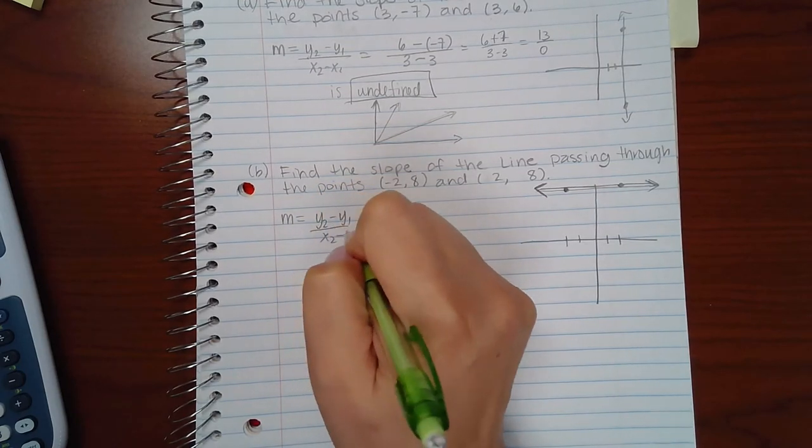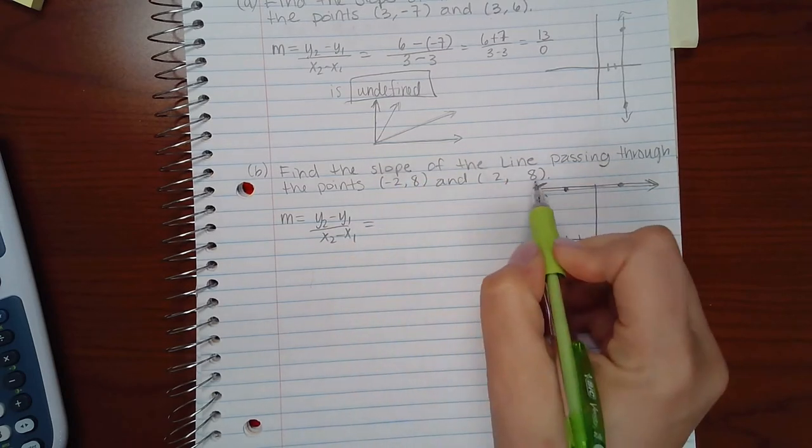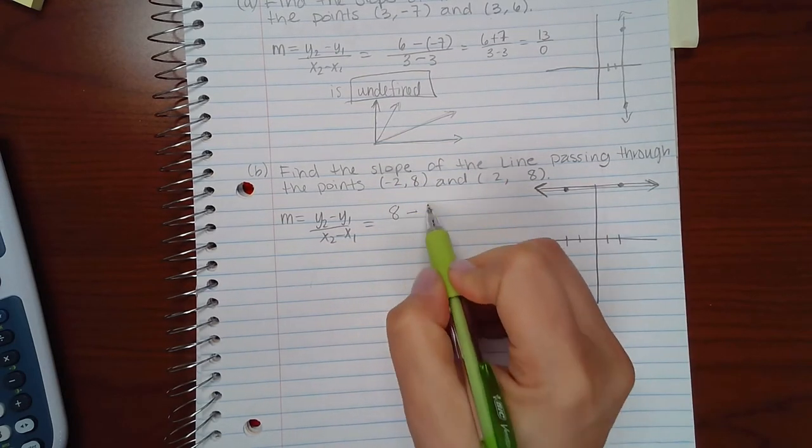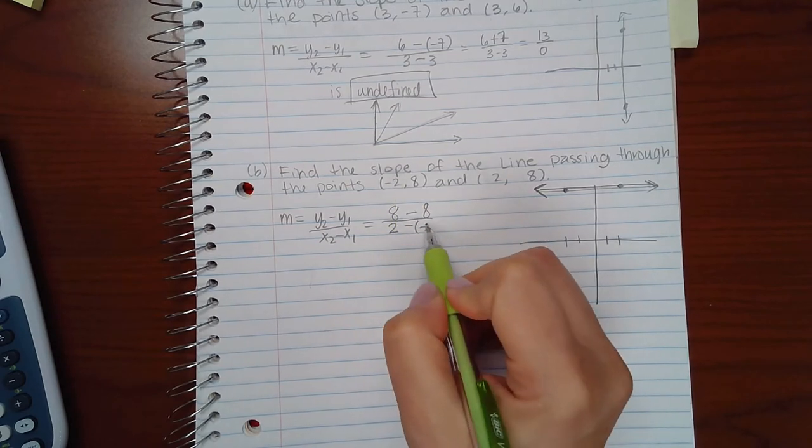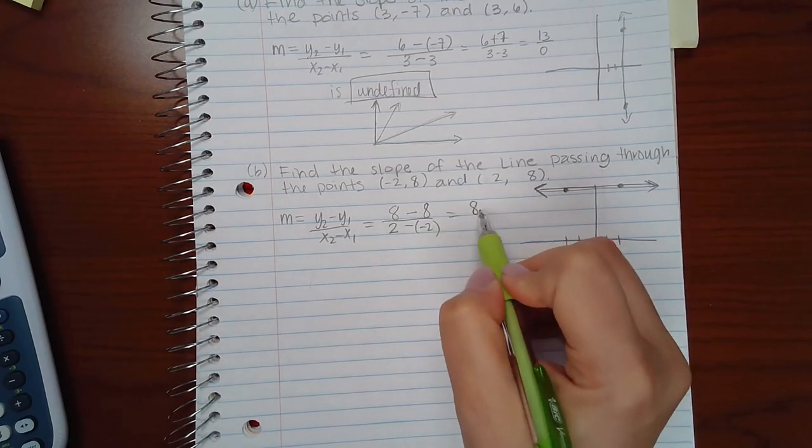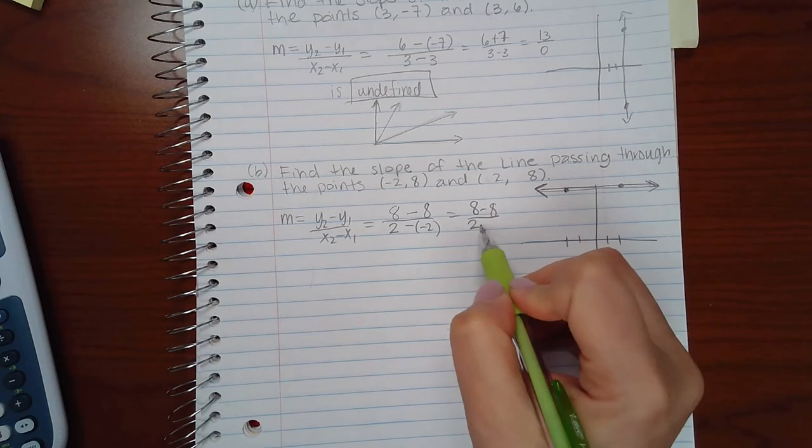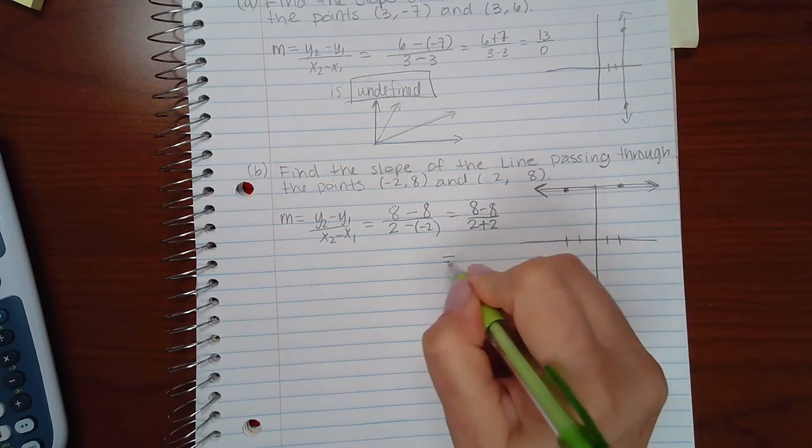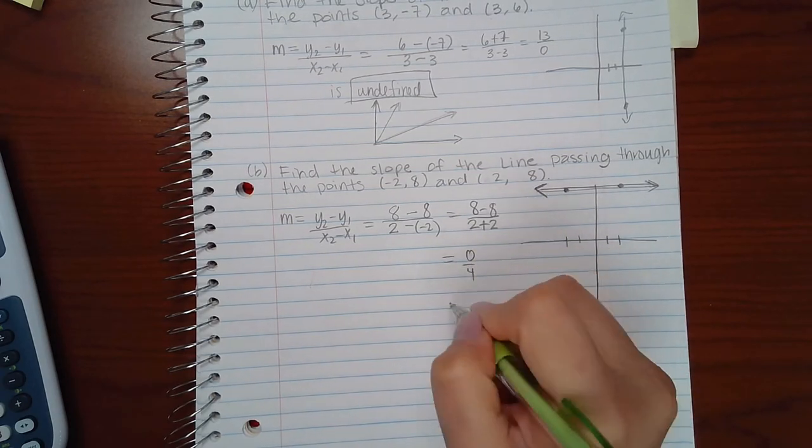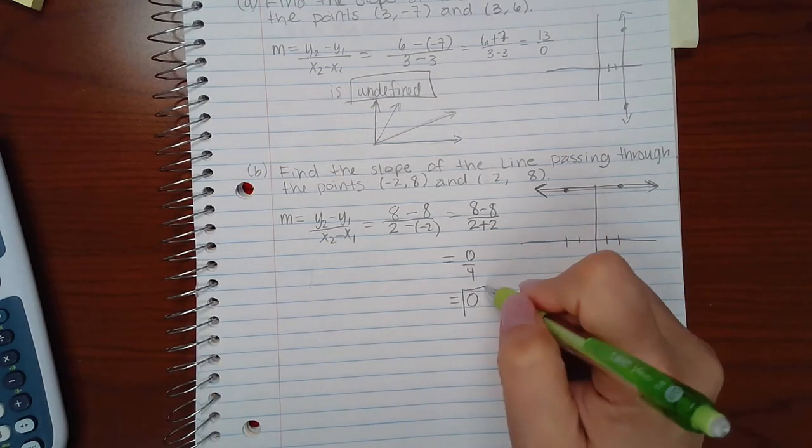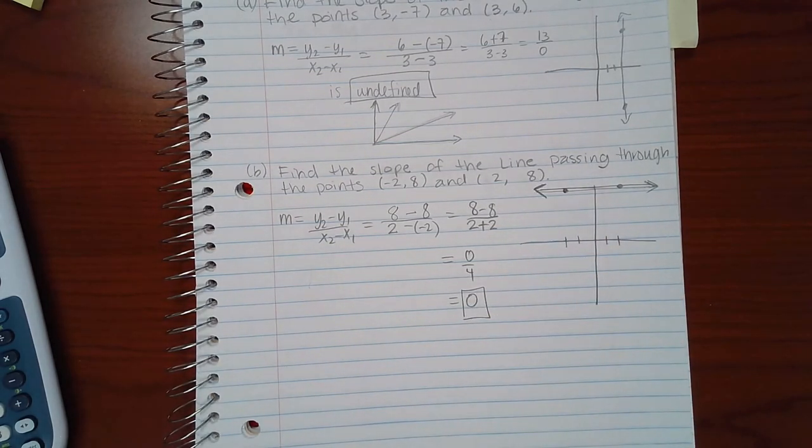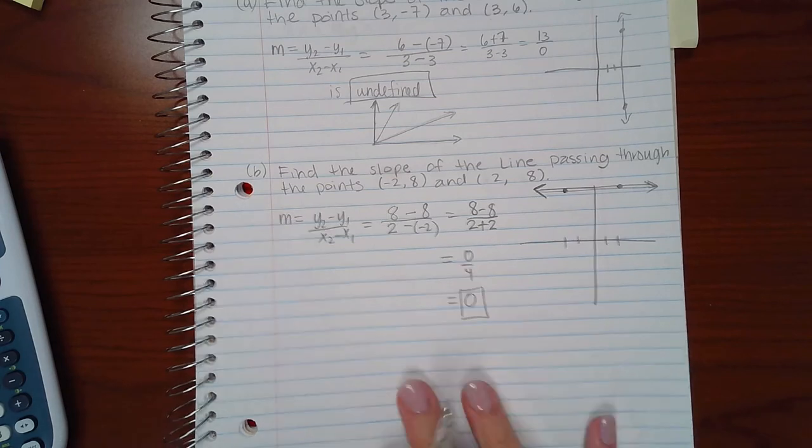But if we follow our slope formula we should get that same zero. So the second y value minus the first y value over the second x value minus the first x value, we end up with eight minus eight over two plus two which is zero over four which does in fact equal zero. So the slope of a horizontal line is zero. The slope of a vertical line is undefined.